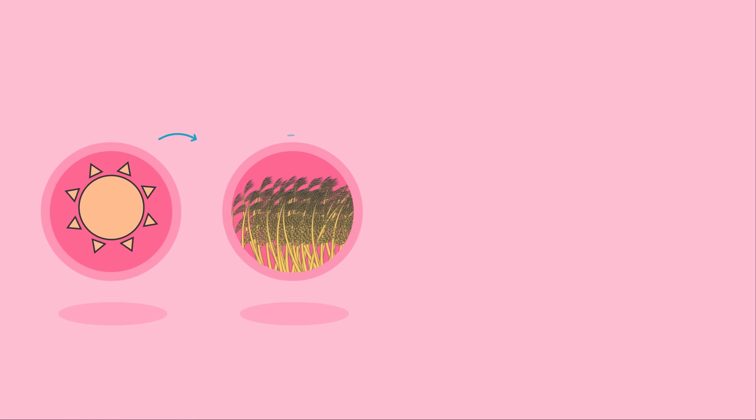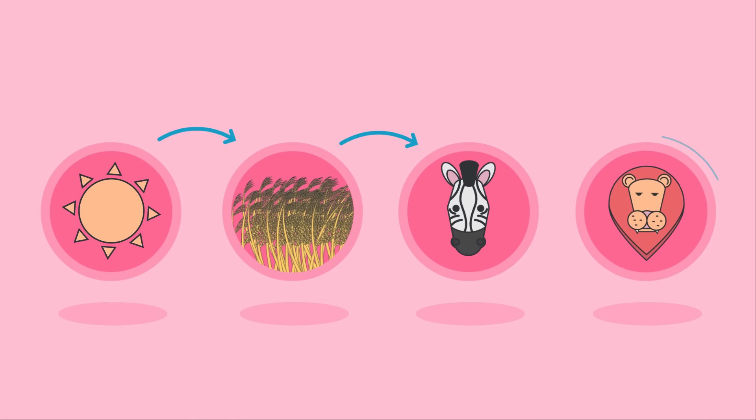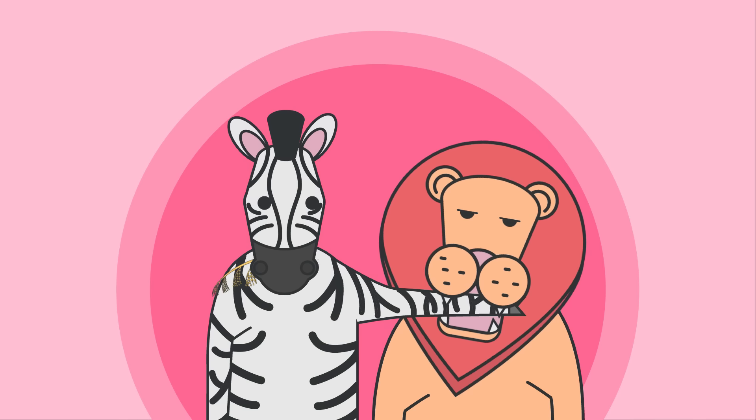So for example, the grass uses energy from the Sun, the zebra eats the grass, a lion then eats the zebra. Think of it as the food's journey into the mouth of the next organism.